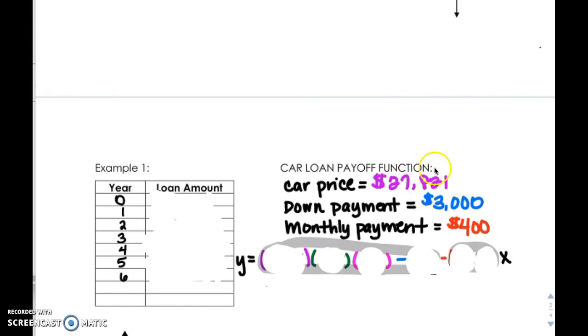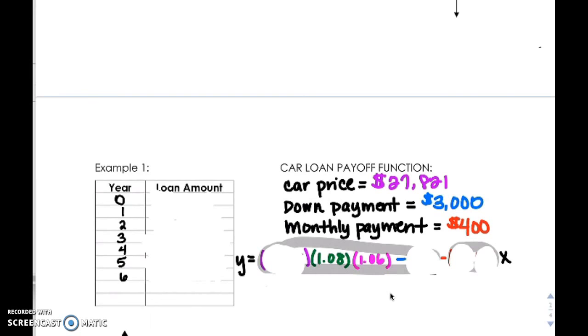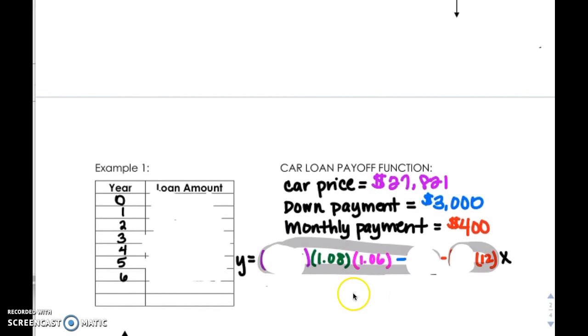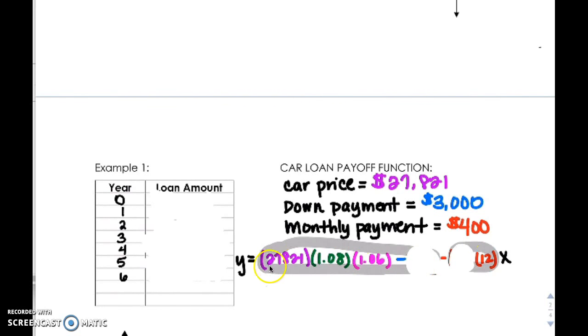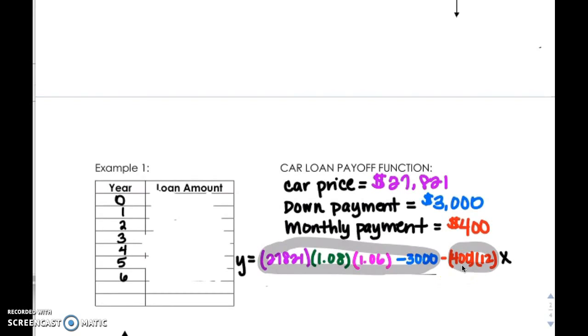So our example we're giving you is a car that costs $27,821. We're telling you that you are putting in a down payment of $3,000 and you're making monthly payments of $400. Those three pieces of information are all you need to write your function because two things are always going to stay the same, the 1.08 and the 1.06. You're also always going to have your 12 in front of your X multiplying by your monthly payment. So you substitute your car price in here, you substitute your down payment here, and you substitute your monthly payment here. And your function is Y equals your car price times 1.08 times 1.06 minus your down payment minus your monthly payment times 12 times X. You can simplify this in a few pieces if you want and come up with this equation.